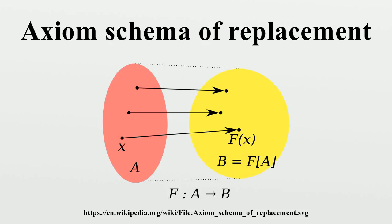History. The axiom schema of replacement was not part of Ernst Zermelo's 1908 axiomatization of set theory. Some informal approximation to it existed in Cantor's unpublished works, and it appeared again informally in Mirimanoff. Its publication by Adolf Fraenkel in 1922 is what makes modern set theory Zermelo-Fraenkel set theory. The axiom was independently discovered and announced by Thoralf Skolem later in the same year. Zermelo himself incorporated Fraenkel's axiom in his revised system published in 1930, which also included as a new axiom von Neumann's axiom of foundation. Although it is Skolem's first-order version of the axiom list that we use today, he usually gets no credit since each individual axiom was developed earlier by either Zermelo or Fraenkel. The phrase Zermelo-Fraenkel set theory was first used in print by von Neumann in 1928.